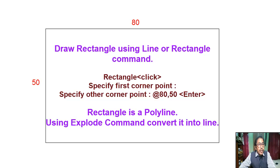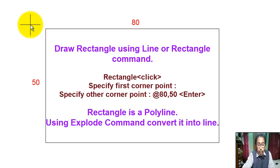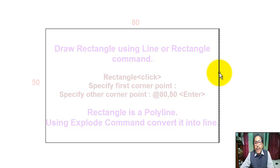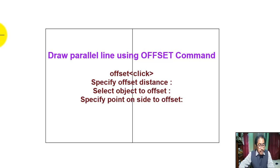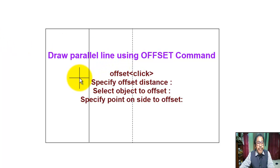Now click on offset. Specify offset distance 40 and press Enter. Click on the line and specify direction. Again click on offset, specify offset distance 20, click on the line, and specify direction.